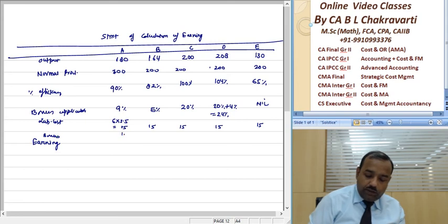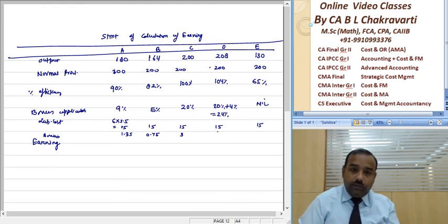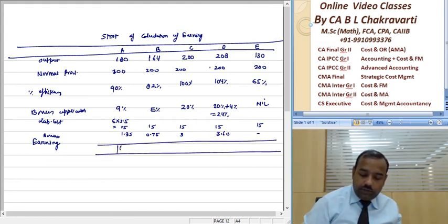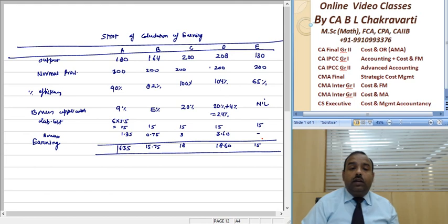What will be the bonus? Zero for E. The earnings will be: 16.35, 15, 18, 60. These are their earnings.